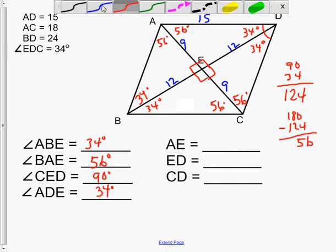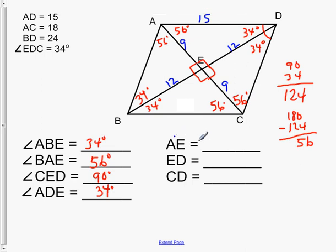So let's look at the sides then. It says AE, AE we figured out was 9. ED, we figured out was 12. Once again, that's because it was half of 24.